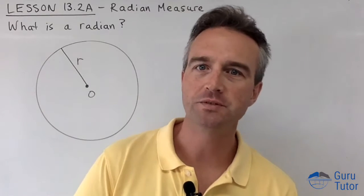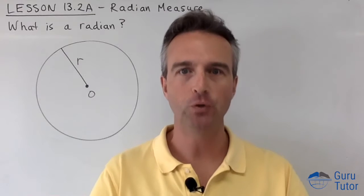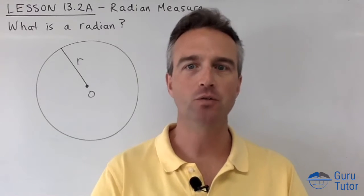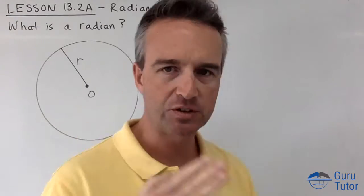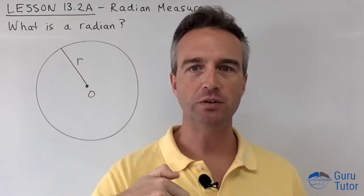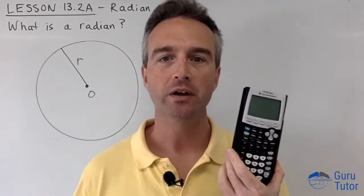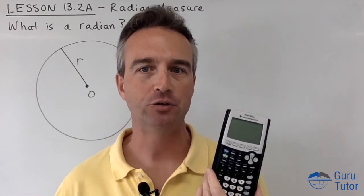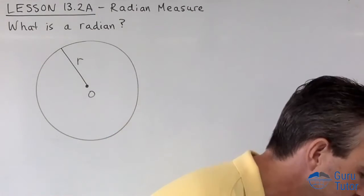From now on we're mixing things in. We've got degrees, but we're also going to introduce a new measure of angle called the radian. So you can have degrees or you can have radians. I was talking about this with the GDC before. Remember when you go to mode, you've got radian mode and degree mode. Until now you wanted it in degree mode. So what is a radian?